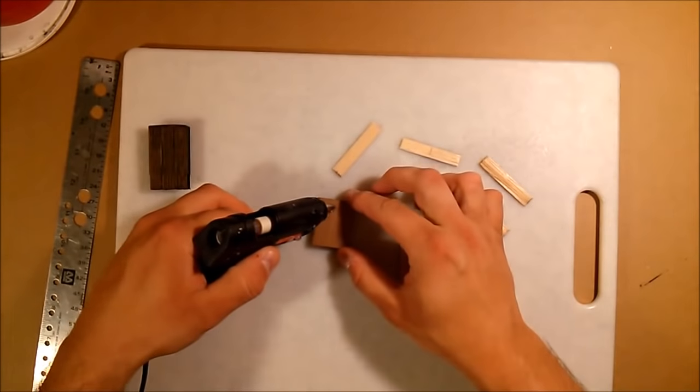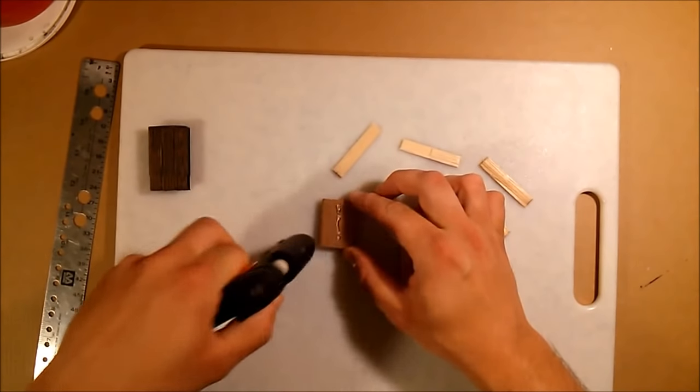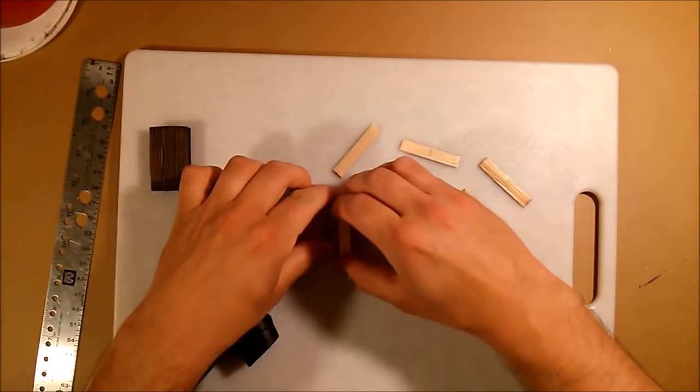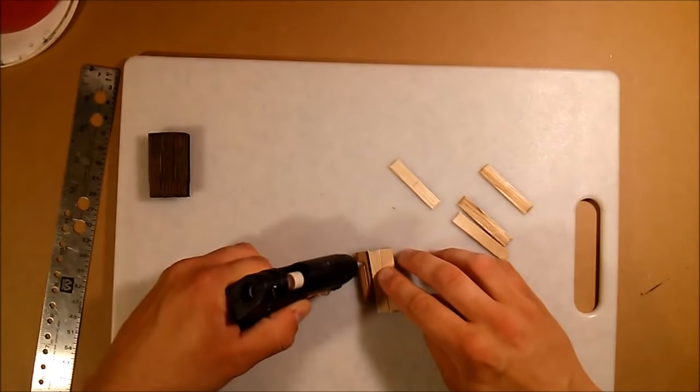Now, fire up the hot glue gun. Apply a thin bead in the center of the cardboard. Apply one plank to the glue, ensuring that it is dead center.